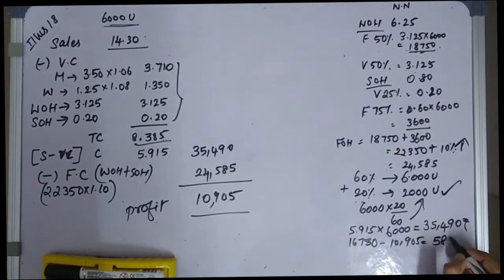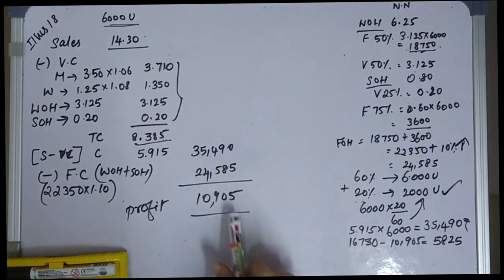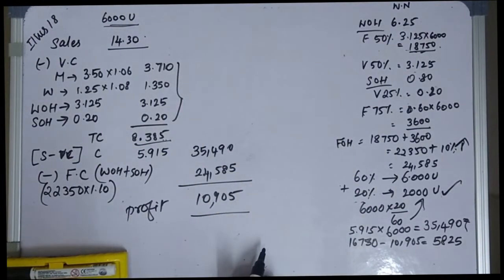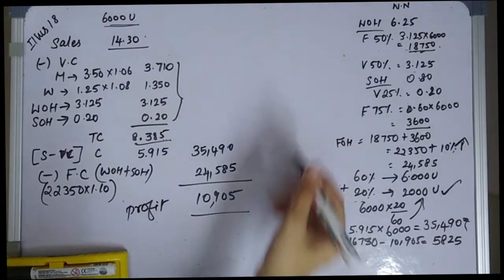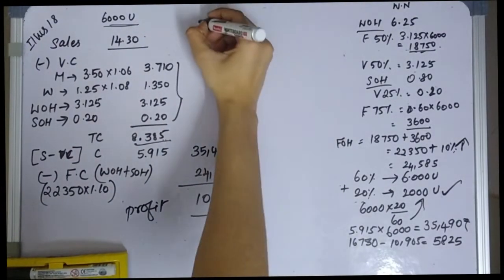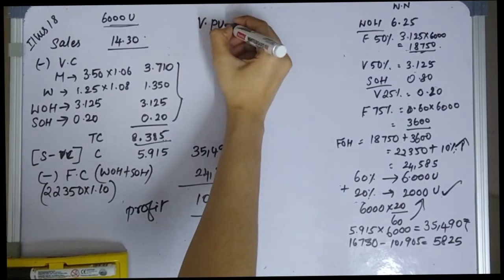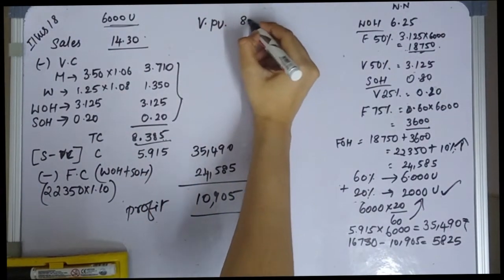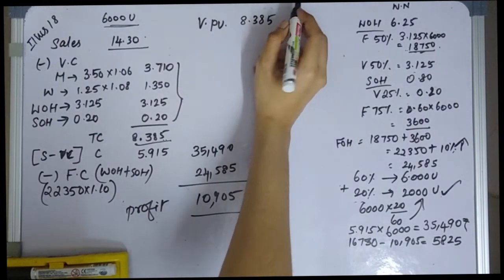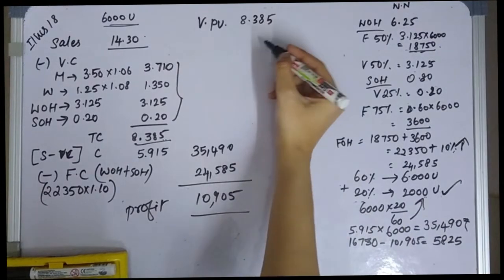Now we calculate the profit position. For the additional 2,000 units at 20% capacity, the variable cost per unit is 8.385. The required overall profit is 16,730 rupees. The additional 2,000 units must contribute enough to cover remaining fixed costs and achieve the target profit.